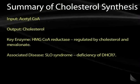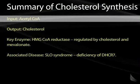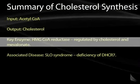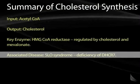To summarize cholesterol synthesis: it is a very complex process broken down to a few key steps. The input is acetyl-CoA, the output is cholesterol, and the key enzyme is HMG-CoA reductase, which converts HMG-CoA to mevalonate. This is negatively feedback regulated by both cholesterol and mevalonate. The disease associated with this pathway is SLO syndrome, caused by a deficiency of DHCR7, blocking the conversion of 7-dehydrocholesterol to cholesterol.